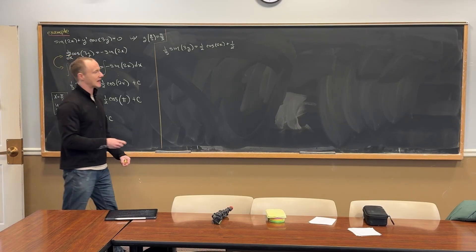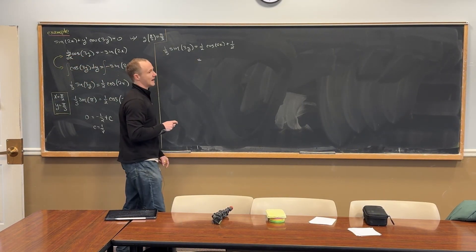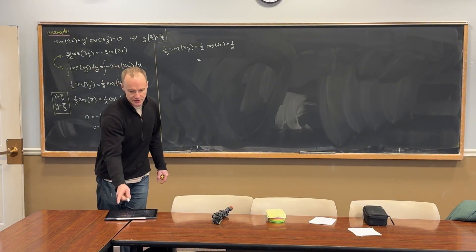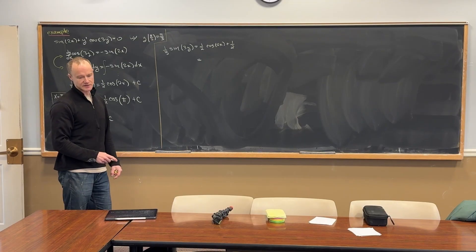But in this case we can, and I think it's even made a little bit easier by simplifying the right-hand side using a trig identity. So does anyone have an idea of a trig identity that would simplify the right-hand side?